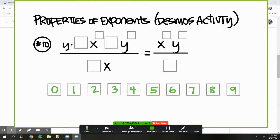This is number 10 on the properties of exponents Desmos activity. I think this was the challenge problems. Number 10. If I'm looking at this problem and notice that I have two coefficients on the numerator, one on the denominator for the left-hand side, and then I only have one coefficient on the denominator on the right-hand side.